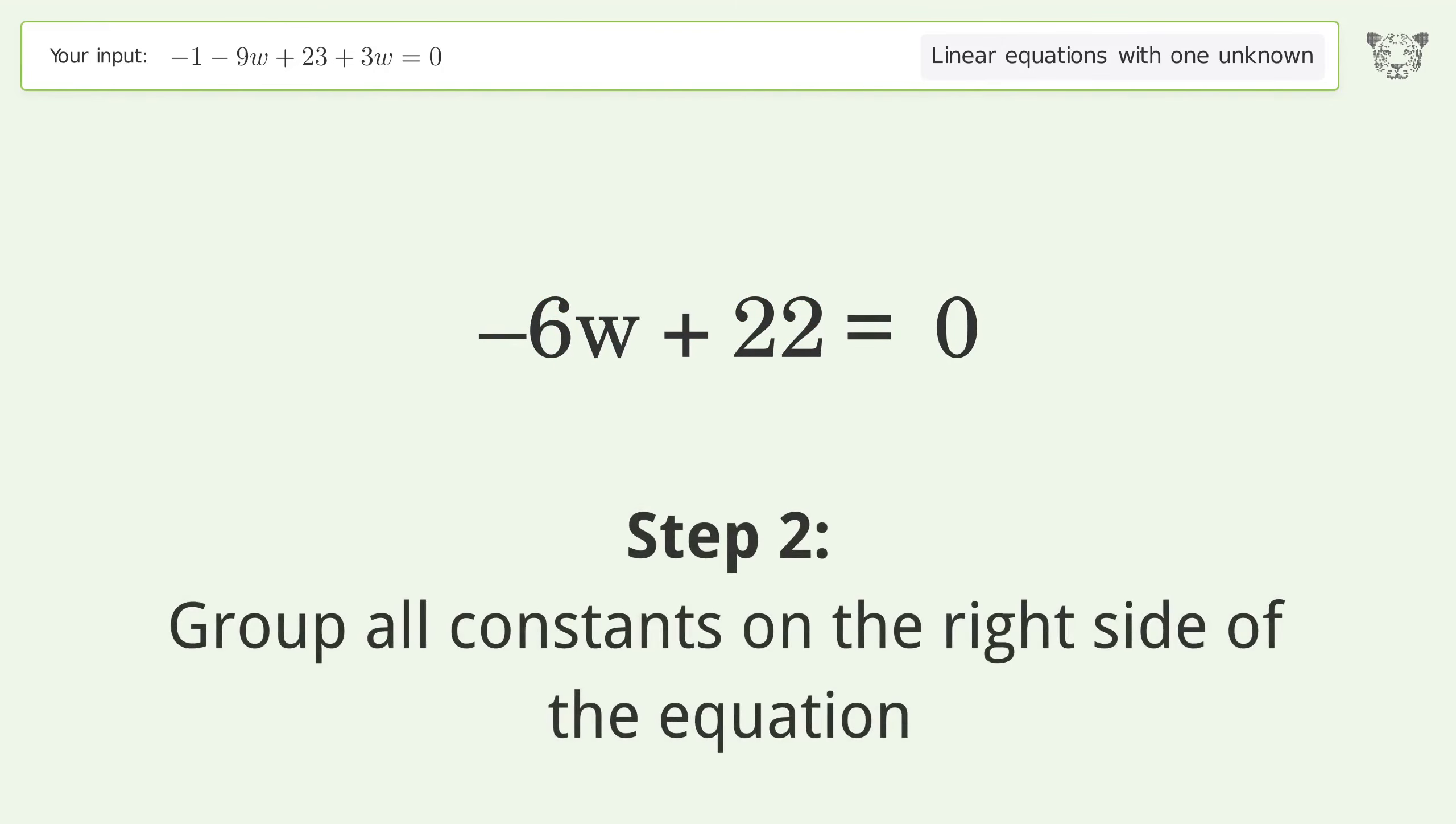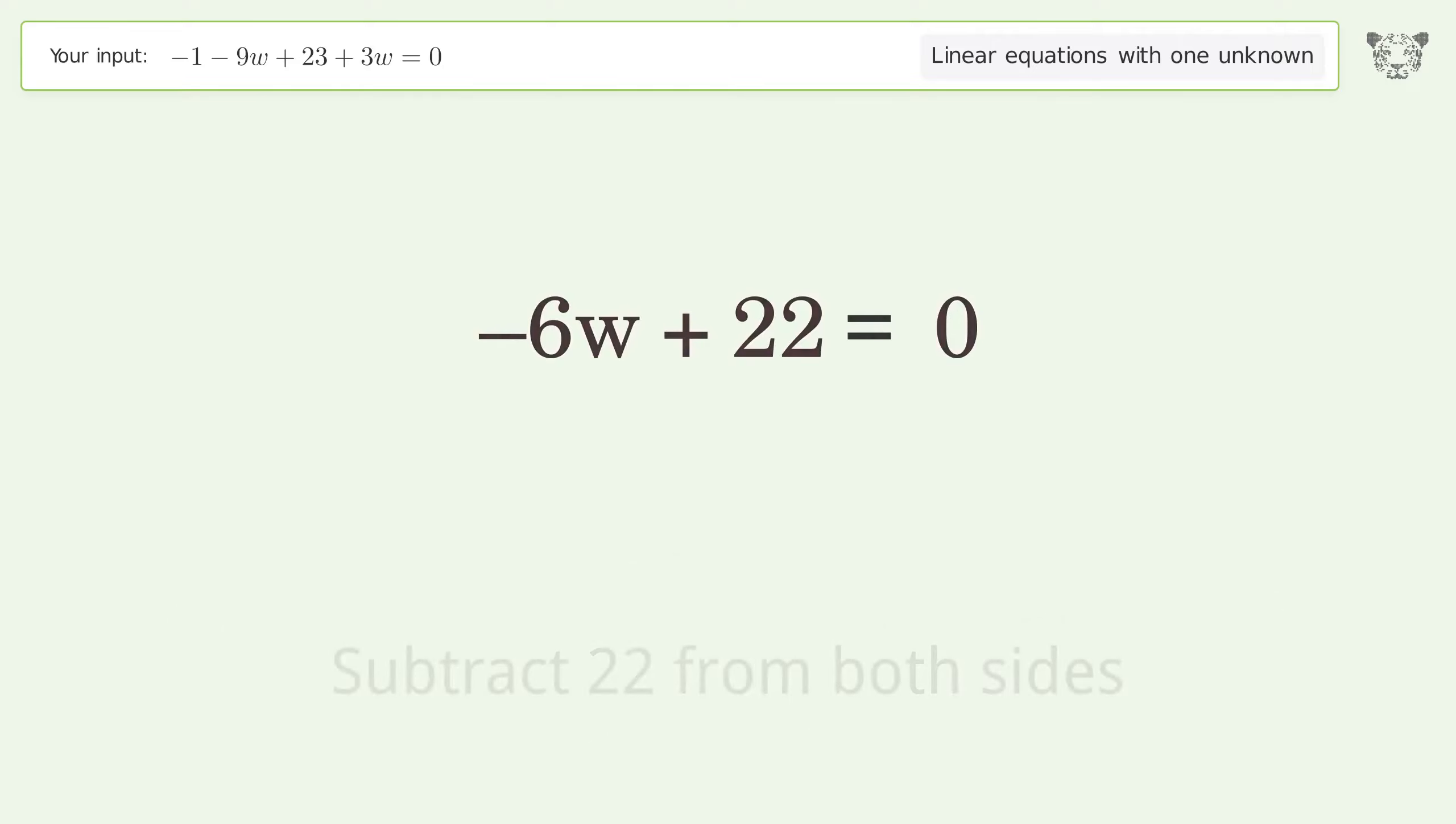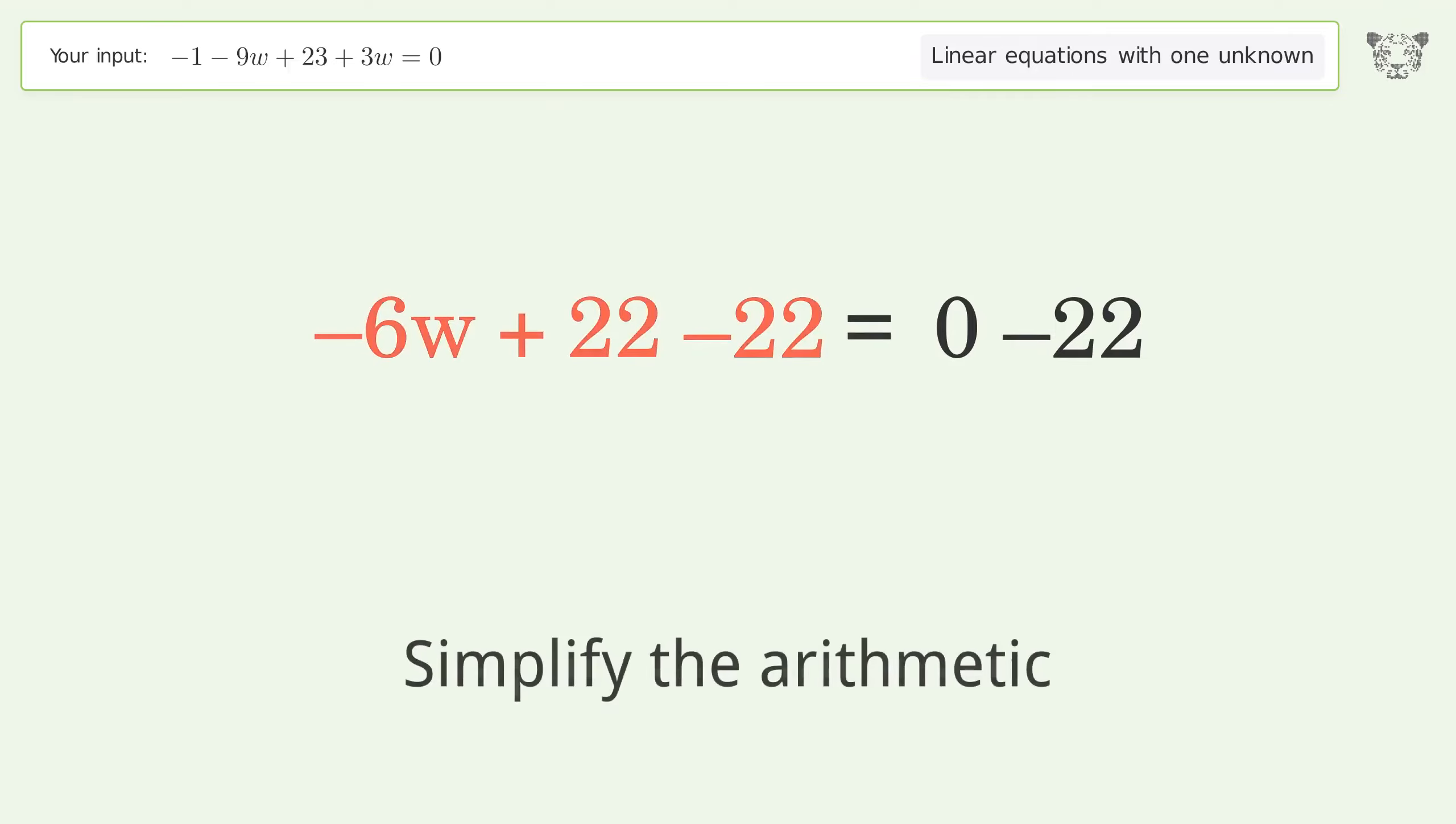Group all constants on the right side of the equation. Subtract 22 from both sides. Simplify the arithmetic.